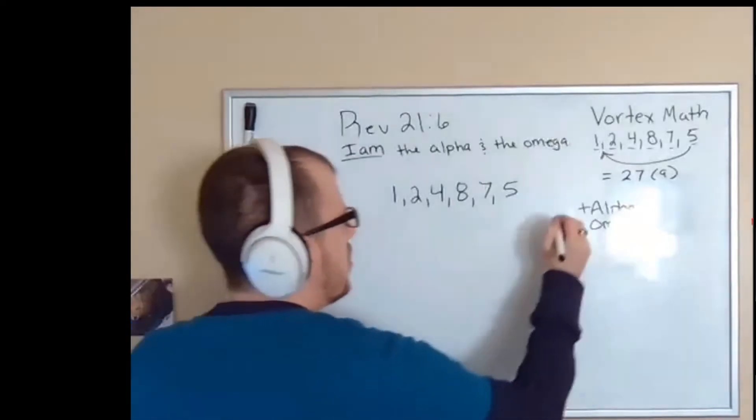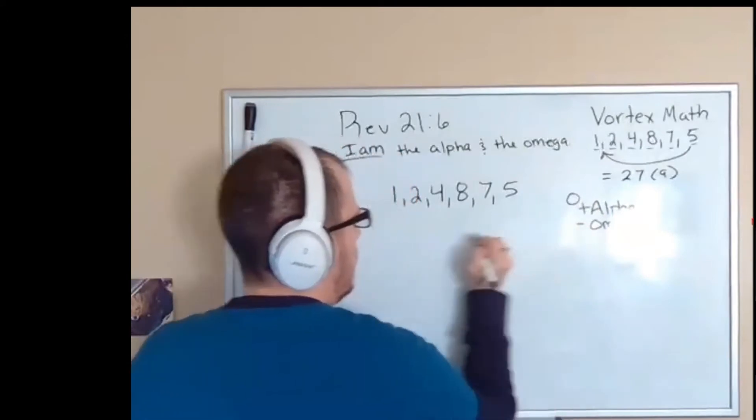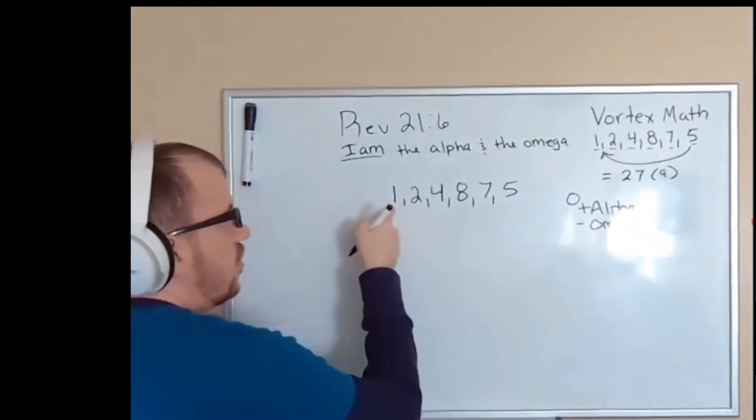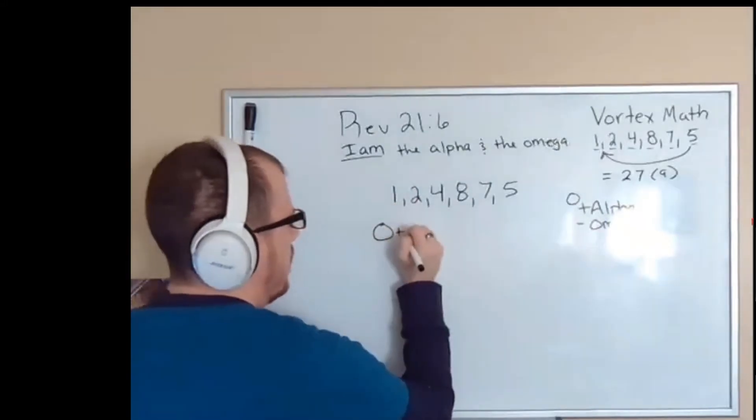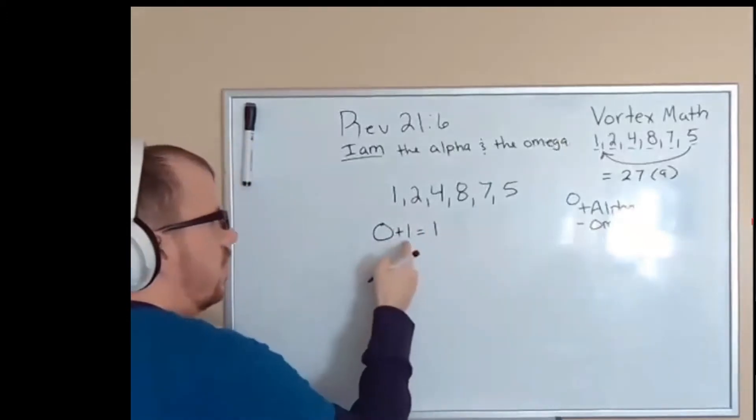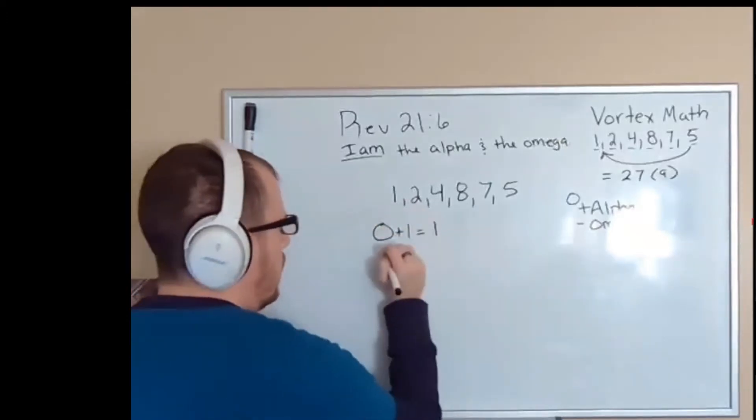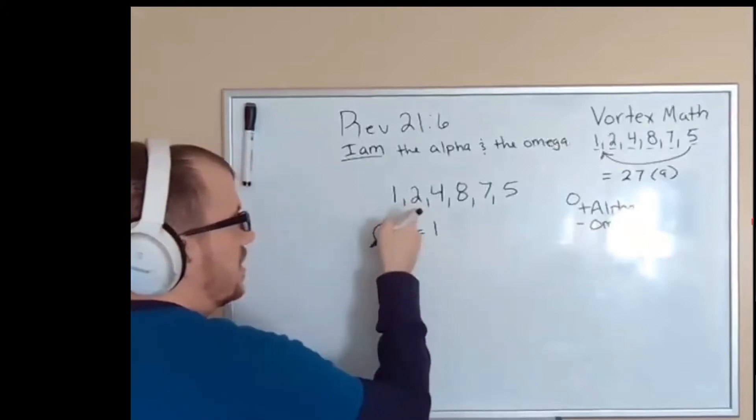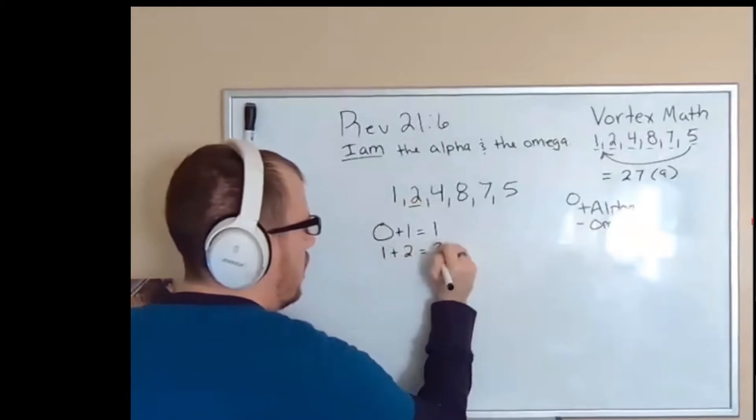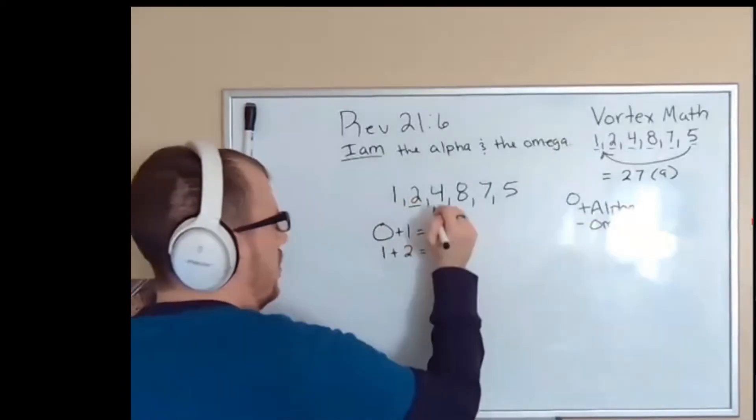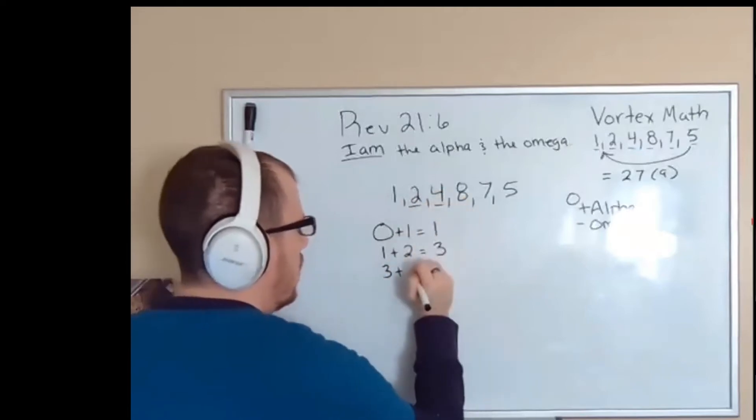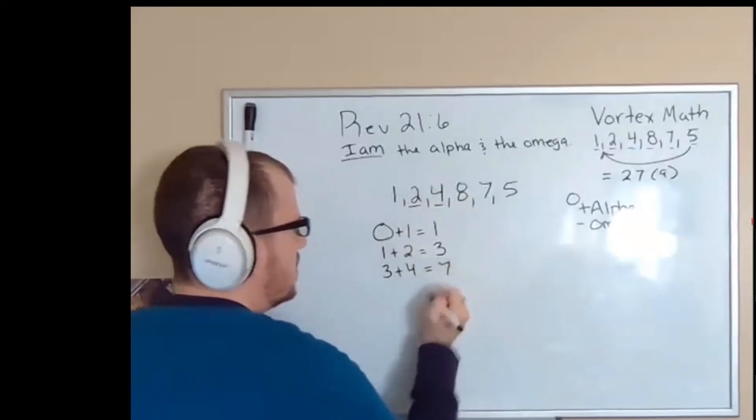So if you start with zero on the alpha and you add the next number in the vortex math, you end up with one. Zero plus one is one. If you take that one and add it to the next number, two, that's going to give you three. Do it again.